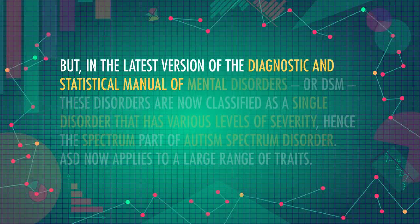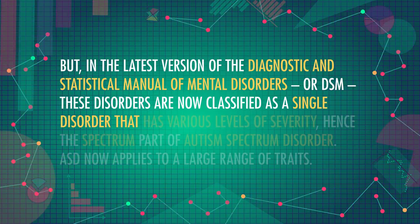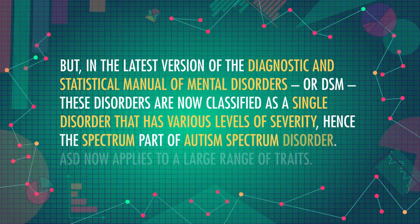One compelling application of hierarchical clustering is to look for subgroups of people with autism spectrum disorder. Previously, disorders like autism, Asperger's, and childhood disintegrative disorder were considered separate diagnoses, even though they share some common traits. But in the latest version of the Diagnostic and Statistical Manual of Mental Disorders, or DSM, these disorders are now classified as a single disorder that has various levels of severity — hence the 'spectrum' part of autism spectrum disorder. ASD now applies to a large range of traits.